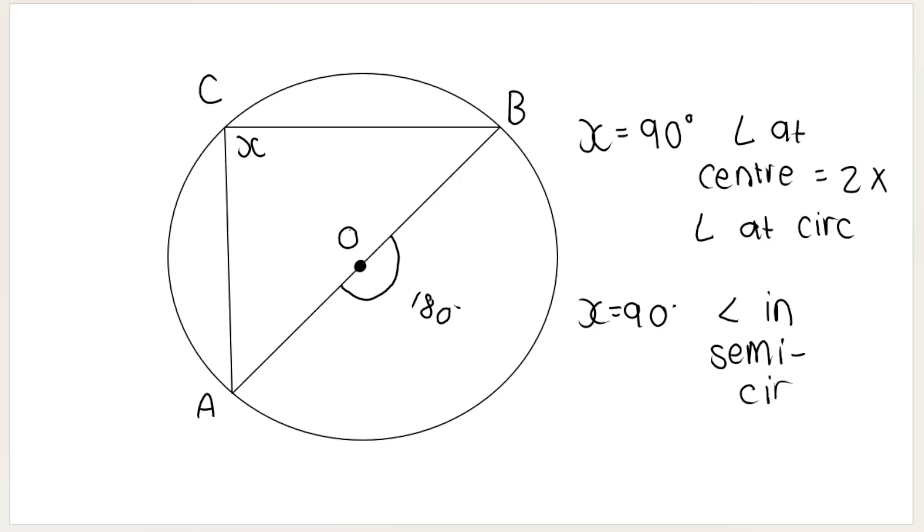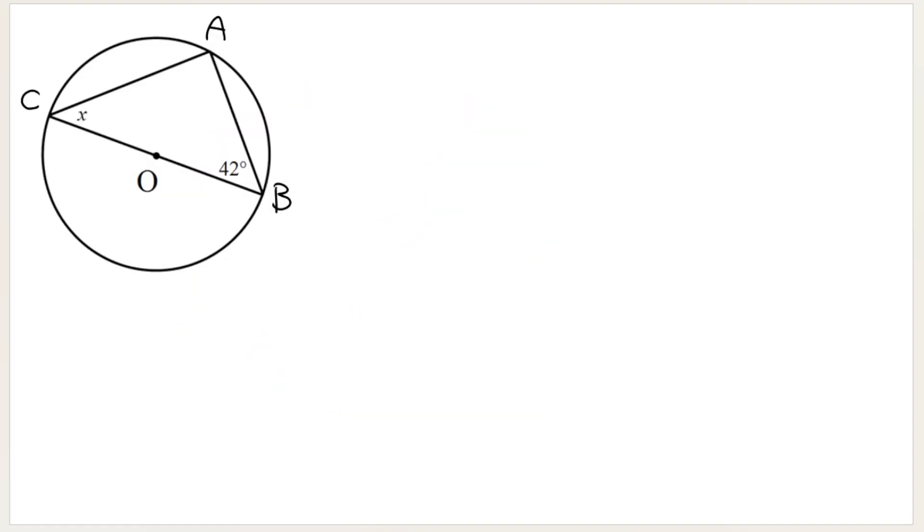And if you're wondering why that is the reason, well, if this is the diameter like this, then it kind of chops the circle in half, and this is a semicircle. So is this one over here. This is the other, another semicircle. So it's angle in semicircle.